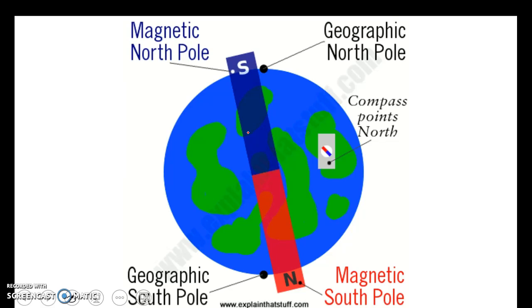The thing that we call the Earth's magnetic north pole is actually the south pole of the magnet inside the Earth. So there's the south pole. When we have a magnet, the north part of the magnet points towards the south pole.